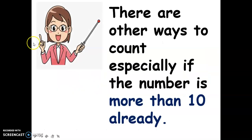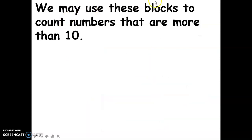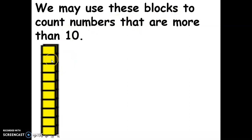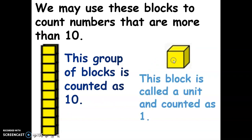Now there are other ways to count, especially if the number is already more than ten. We may use blocks to count numbers that are more than ten. This group of blocks counted as ten is called a long — so one long equals ten blocks. This single block is called a unit and is counted as one.